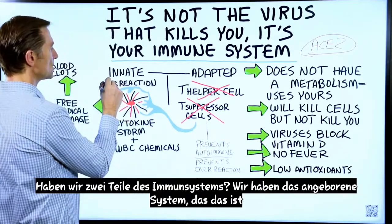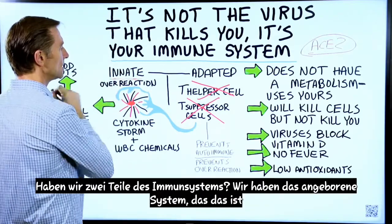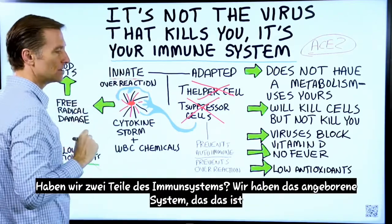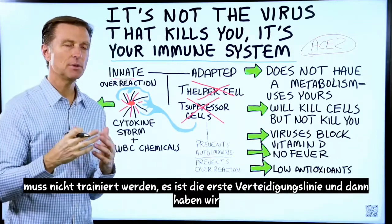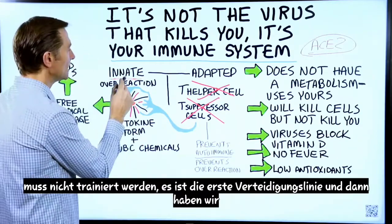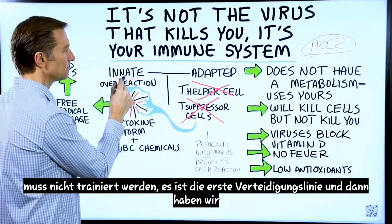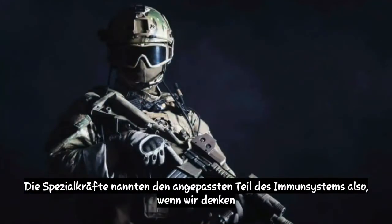What kills you is this. We have two parts of the immune system: we have the innate, which is the system that doesn't need to be trained — it's the first line of defense. And then we have the special forces, called the adaptive part of the immune system.